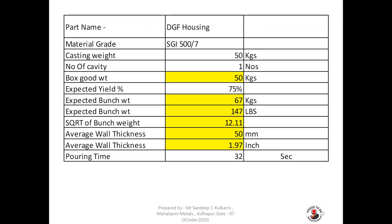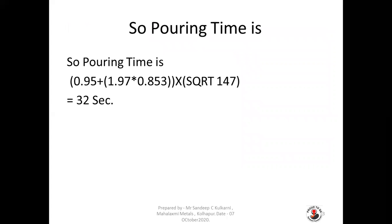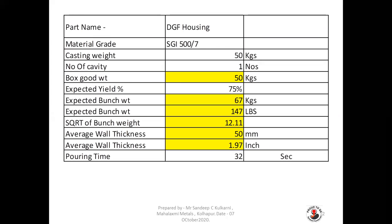The average wall thickness in this example is 50 mm, which converts to 1.97 inches. Applying the formula: (0.95 + 1.97) × 0.853 × √147, where 147 LBS is the bunch weight and 1.97 inches is the average wall thickness. The calculation gives 32 seconds as the pouring time.